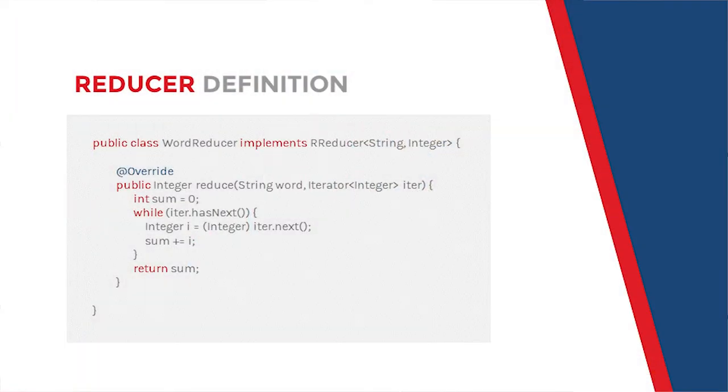The mapper object is used to produce intermediate values and store them into Redis using a collector object. This mapper example applies to each map entry, splits the value by space to separate words, and stores each word to Redis. The reducer object handles intermediate values produced during the previous map phase. In our example, it's a word itself and the word occurrences amount collection. This example calculates the total sum for each word.